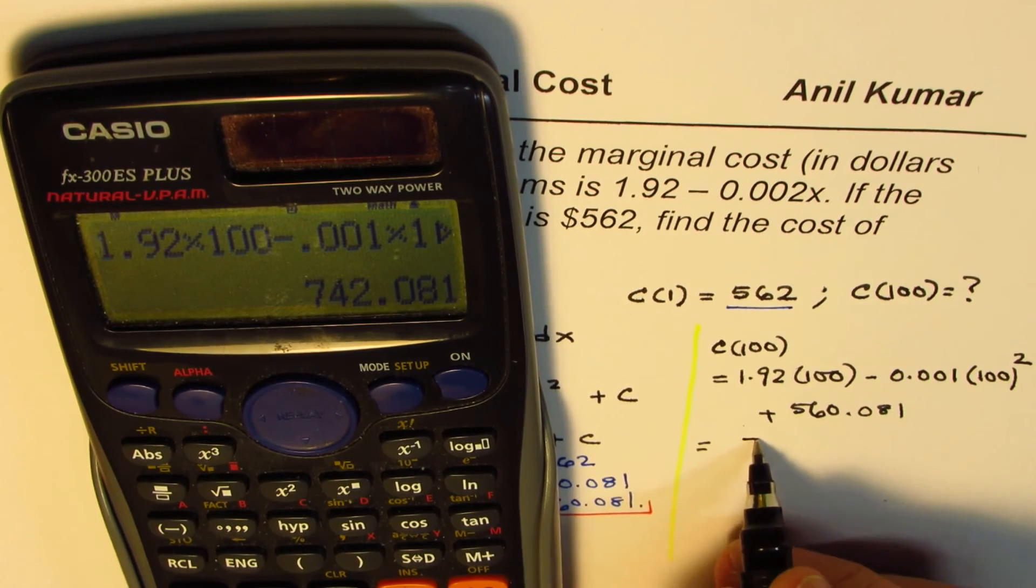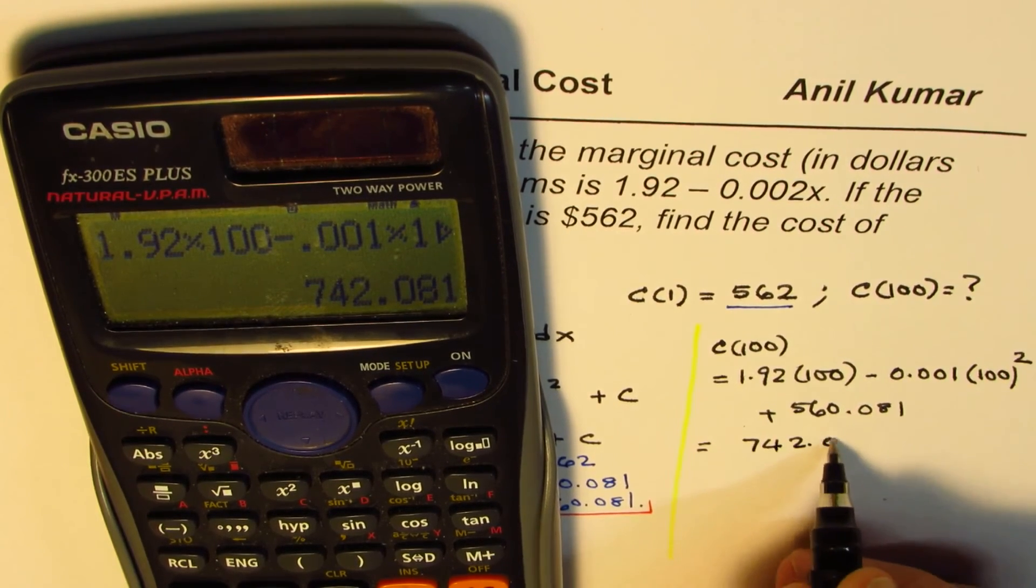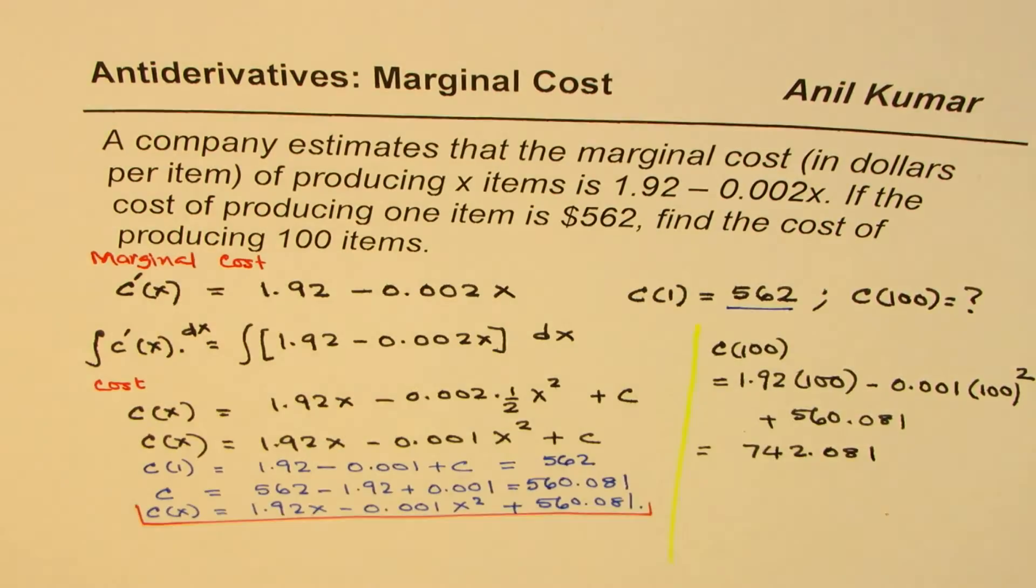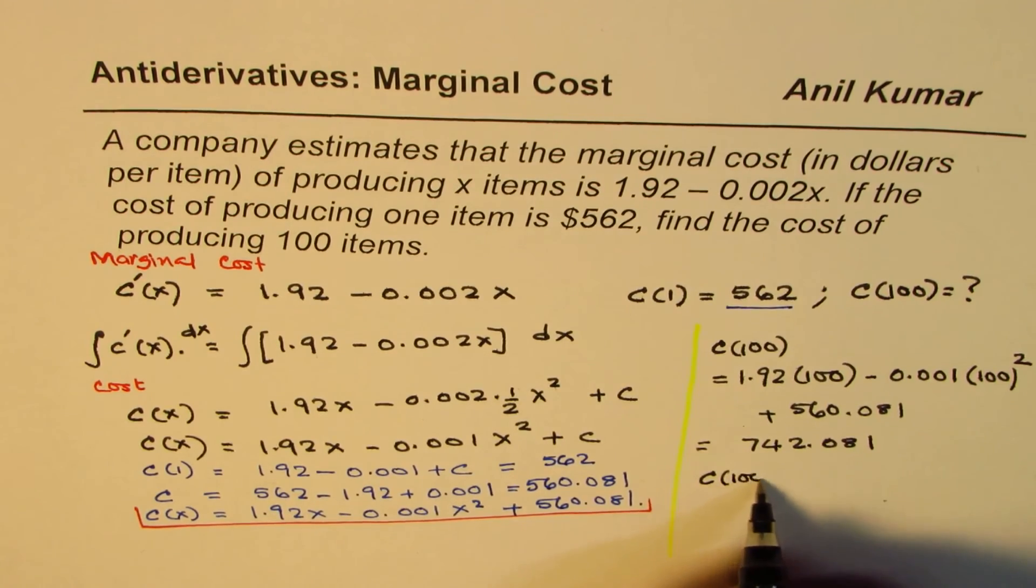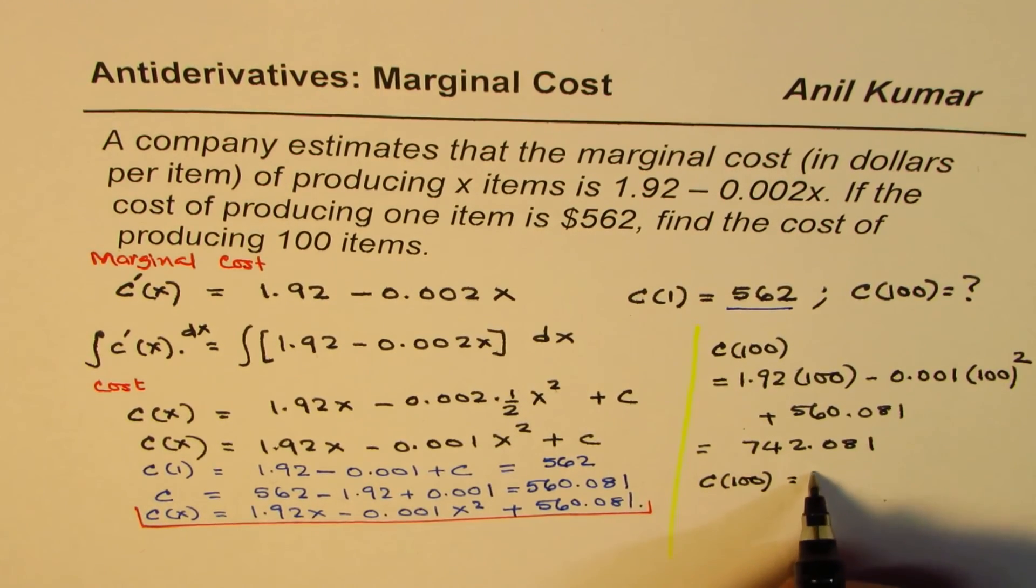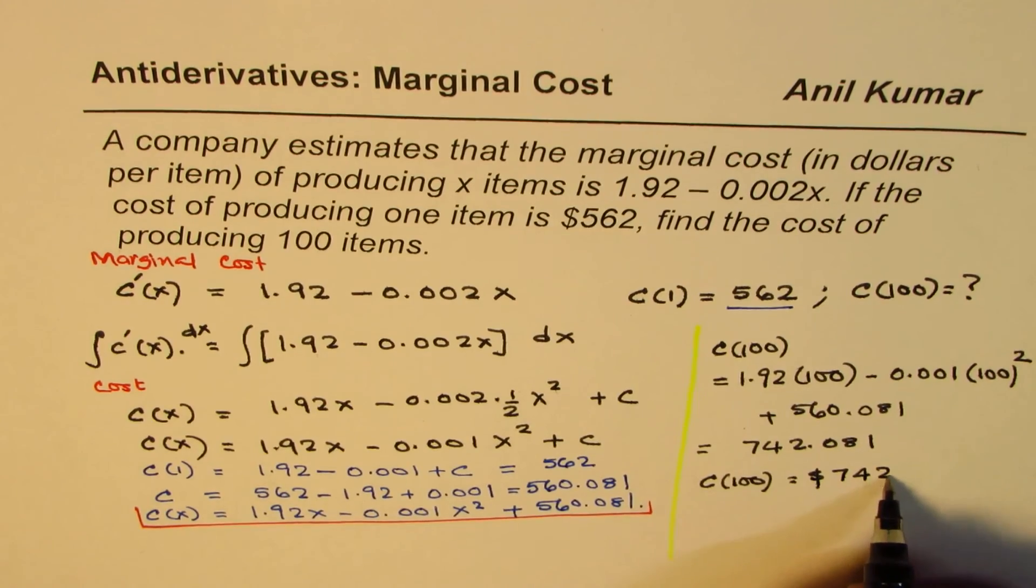Which is 742.081. So the cost of producing 100 items is, C(100) equals approximately, in dollars, 742.